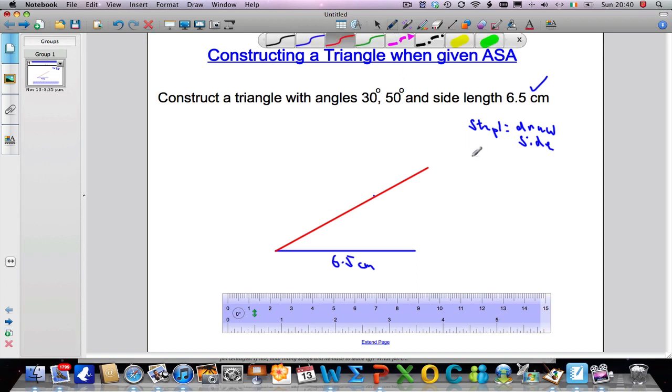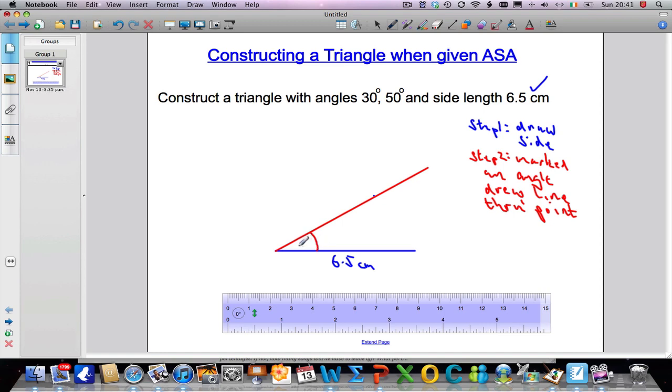So step 2 there, we marked an angle and then we drew a line through the point. I am just going to mark this 30 degrees first before I am on to my final step.